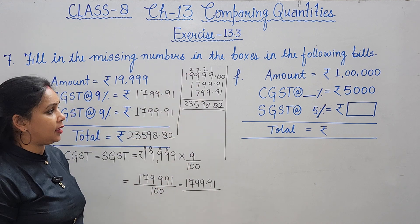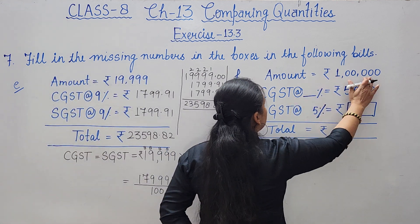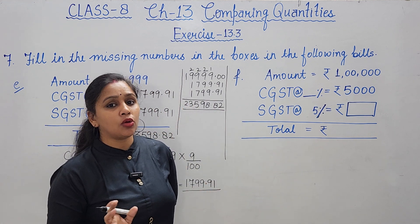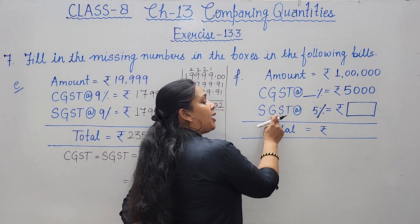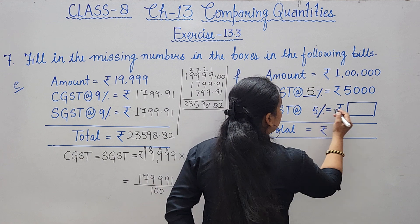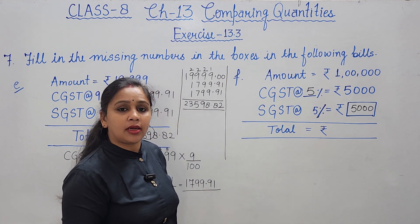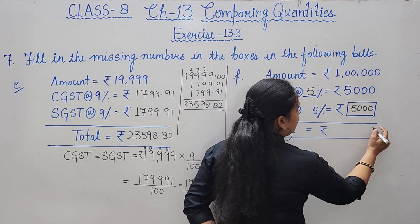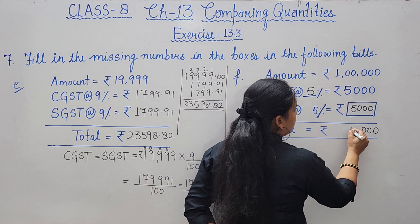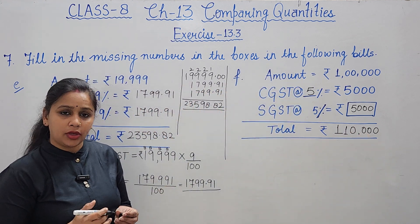Part F: amount is one lakh rupees, CGST is 5% = 5000 rupees, so SGST is also 5% = 5000 rupees. Total = 1,00,000 + 5000 + 5000 = 1,10,000 rupees. Question 7 — fill in the blanks — is now complete.